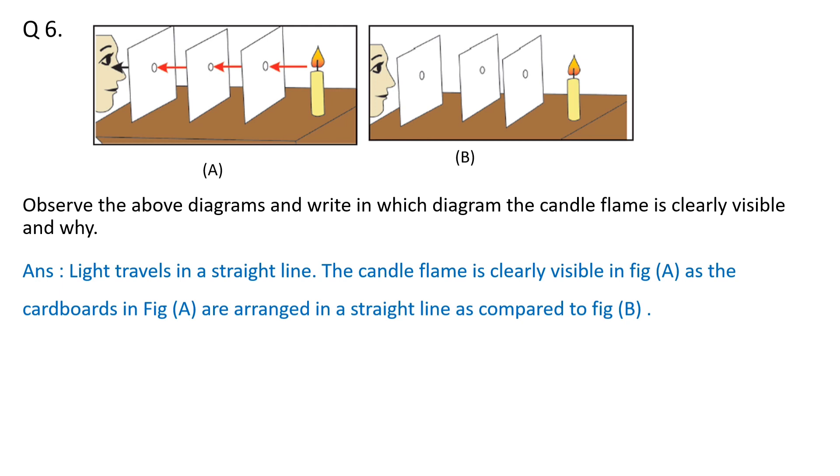The candle flame is clearly visible in figure A as the cardboards in figure A are arranged in a straight line as compared to figure B. When you observe the two diagrams, the cardboards are arranged in a straight line in figure A, so the flame is clearly visible in figure A.